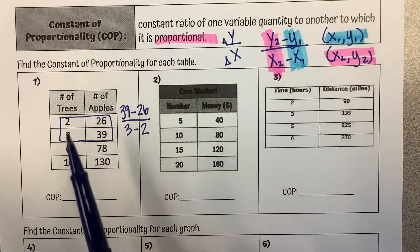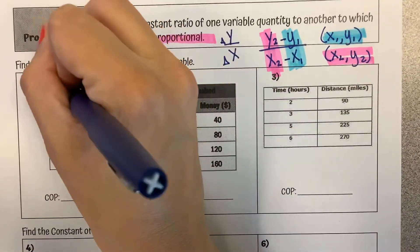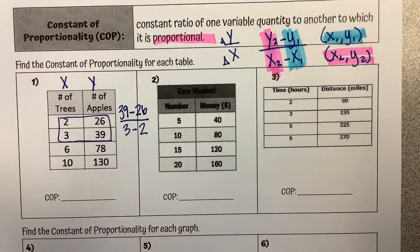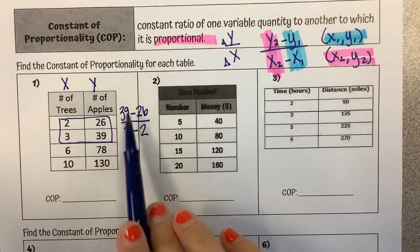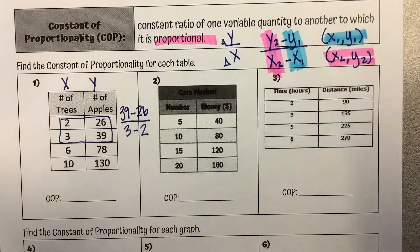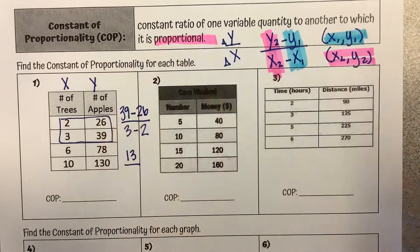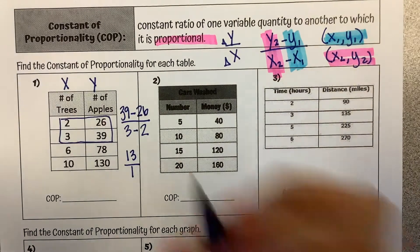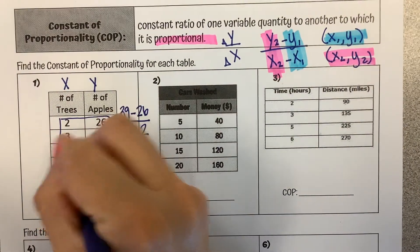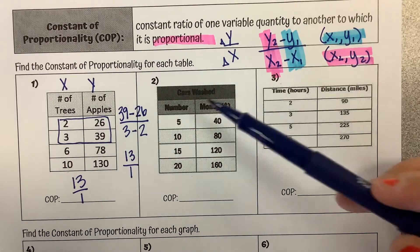So something to note is when you have a table that's vertical like this, it goes in order x, y. So x comes first, y comes second. So that's why I started here for my y's. Then I'm just going to subtract. 39 minus 26 is 13. 3 minus 2 is 1. So our constant of proportionality is 13 over 1.